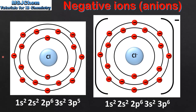Next we look at the formation of negative ions, or anions. On the left we have a chlorine atom which has the electron configuration 1s2, 2s2, 2p6, 3s2, 3p5. The chlorine atom can gain one electron to form a 1- ion, which we can see on the right. The electron has been added to the 3p sublevel, so the chloride ion has a full outer shell of electrons.